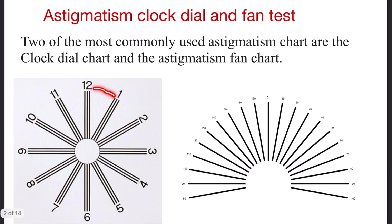The angular difference between two numbers is 30 degrees. Whereas in the astigmatic fan chart, the angular difference is 10 degrees.